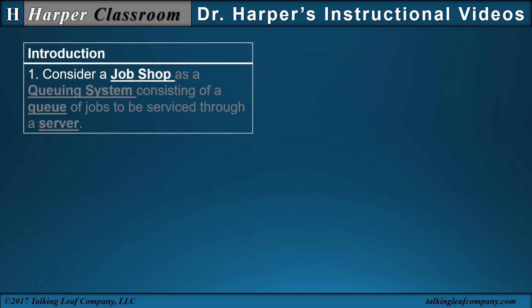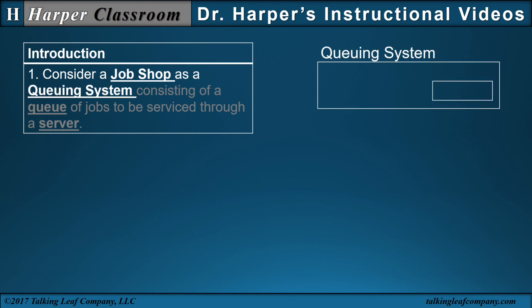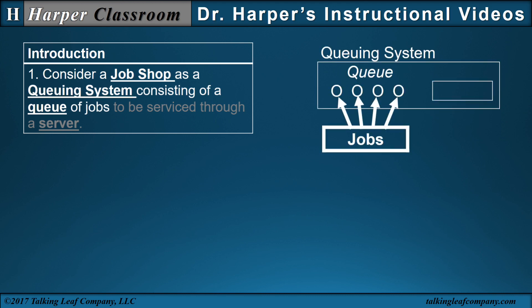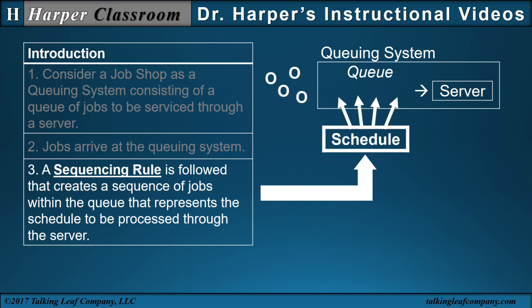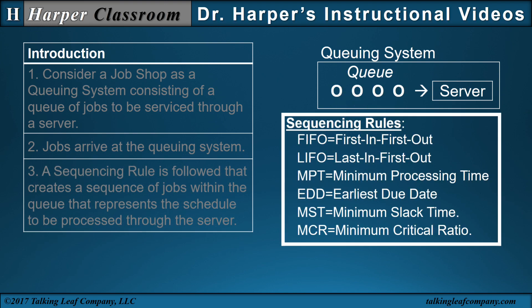As an introduction, consider a job shop as a queuing system consisting of a queue or waiting line of jobs to be serviced through a server. Common examples are people waiting in line at a service counter of a retail store, calls coming into a switchboard of a customer service department, or jobs waiting to be serviced by an operation. Assume the jobs arrive at the queuing system in random order. A sequencing rule is then followed that creates a sequence of jobs within the queue that represents the schedule to be processed through the server. This video will look at these six sequencing rules.